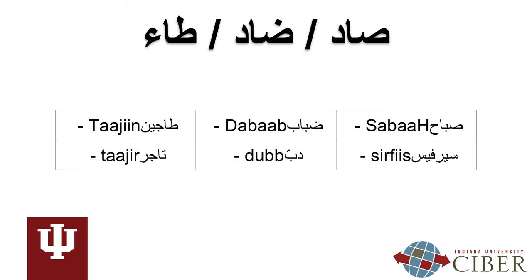Now listen to the difference in pronunciation of the following words that contain emphatic and non-emphatic letters. Practice pronouncing them after me: Sabah, service. Dabab, dub. Tajin, tajir. When you see S, D, or T in transliteration, pay attention to whether the letter is lowercase or uppercase to determine how the word should be pronounced.